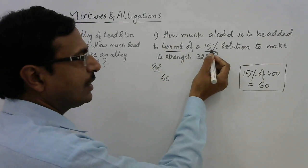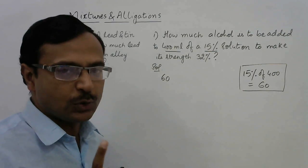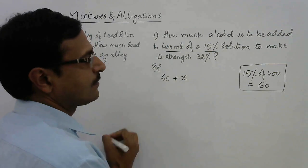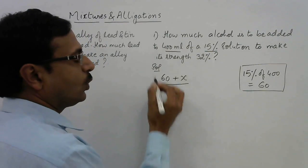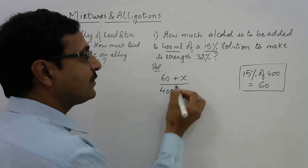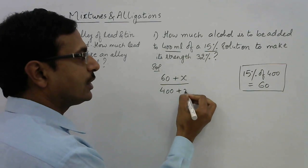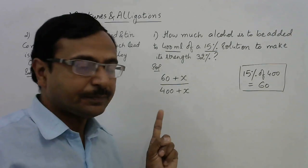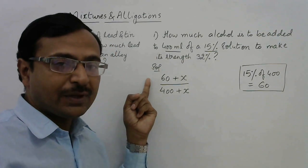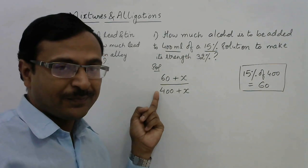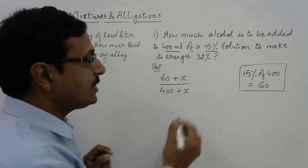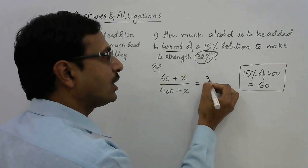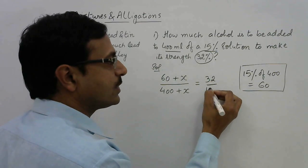This 60 is the amount of alcohol in 400 ml of solution. We are adding x more ml of alcohol, so the alcohol becomes 60 plus x. The total solution becomes 400 plus x. The fraction of alcohol in the total solution is (60 + x) / (400 + x), and this must equal 32 percent, so we equate it to 32/100.